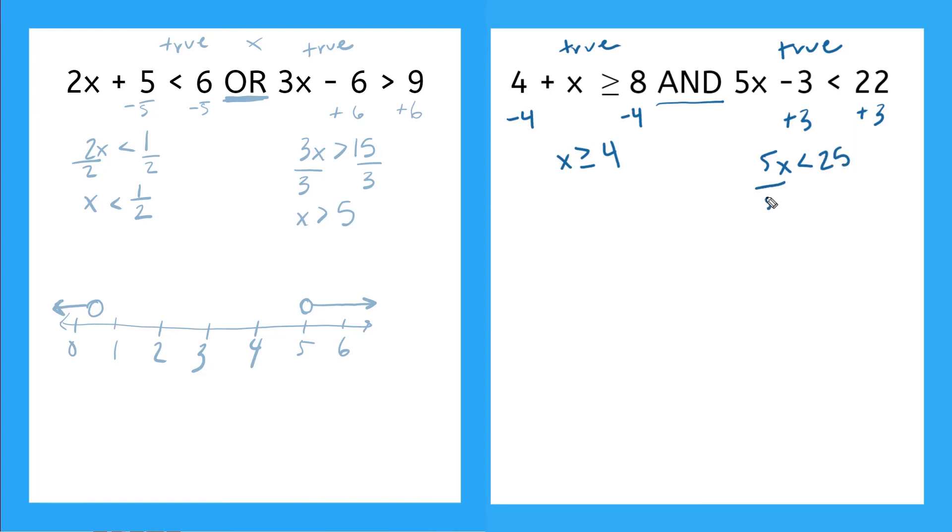And then if I divide by 5, I'll get my X alone. And X is less than 25 divided by 5 is, that's right, 5. So let's go ahead and plot this here so we can see what our solution set might be. So here and here. And 1, 2, 3, 4, 5, 6. We'll start with those there.